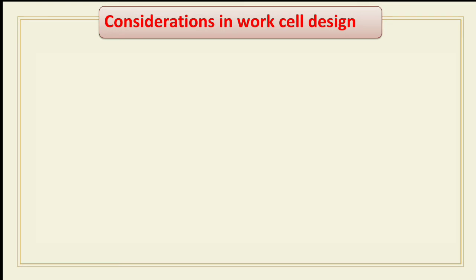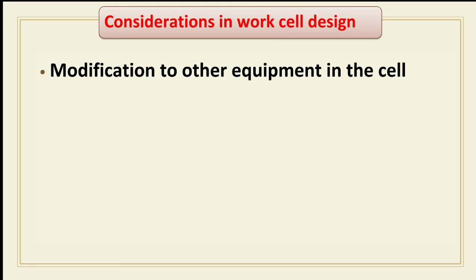Considerations in work cell design — the first consideration is modification to other equipment in the cell. There are several issues that must be considered in the design of a work cell. Among these, the first is modification to other equipment in the cell to implement the work cell and interface the robot to the other equipment.